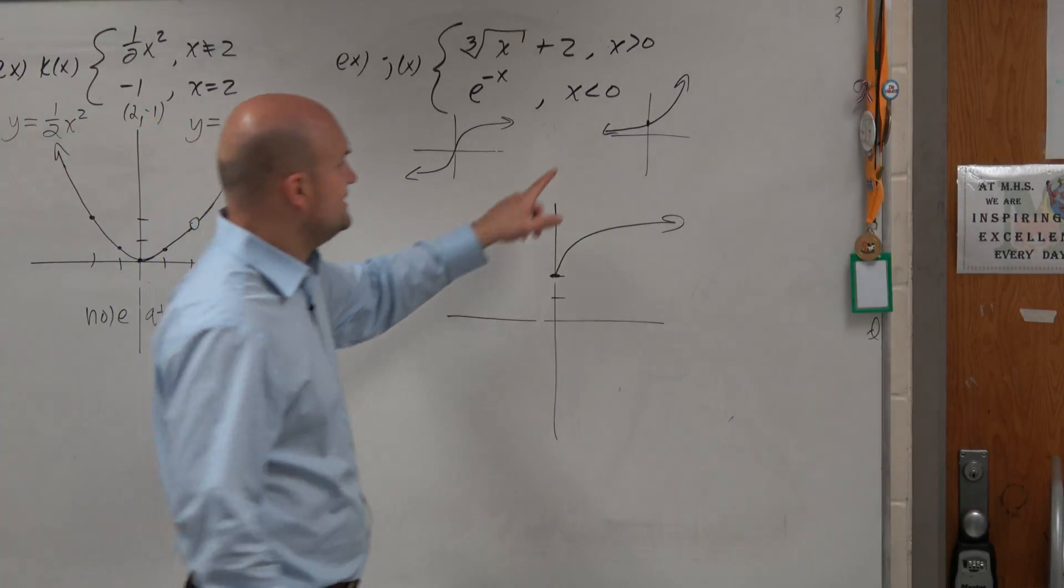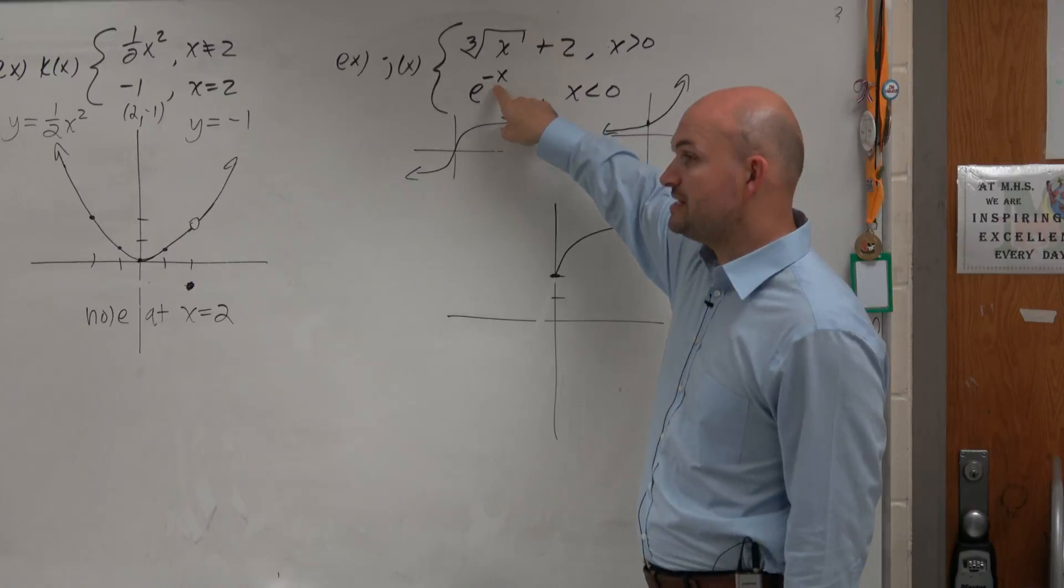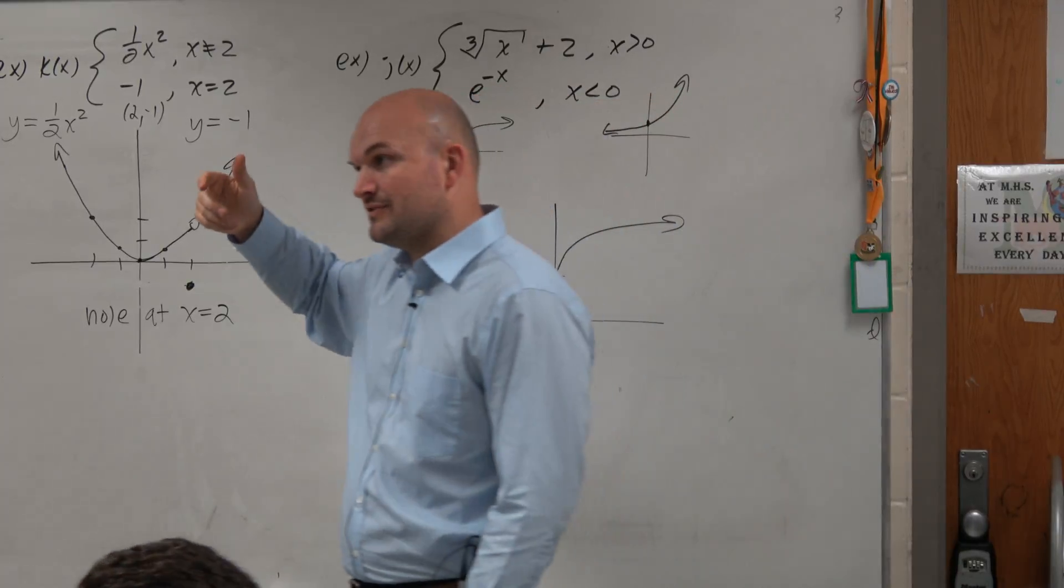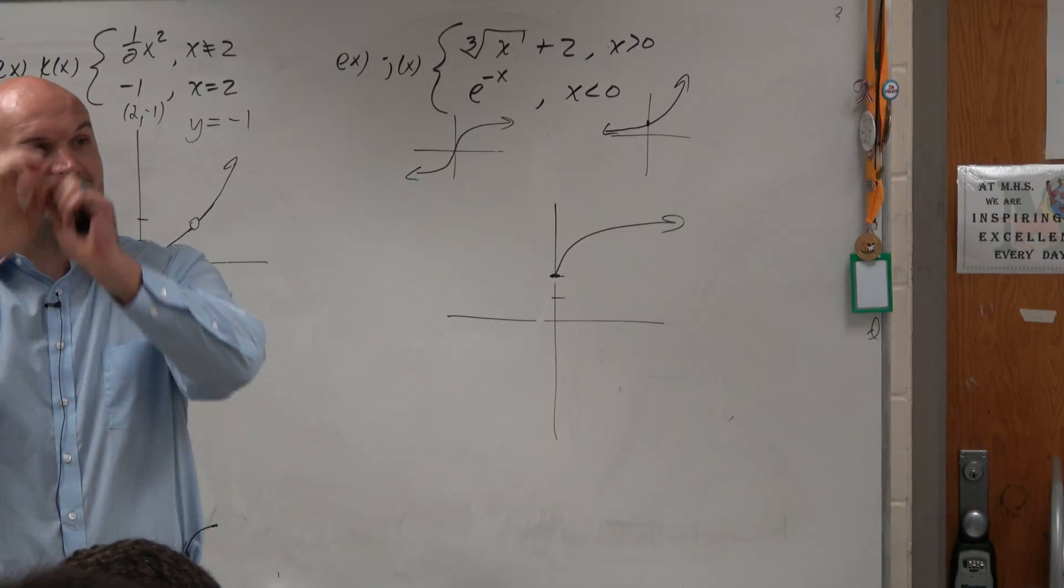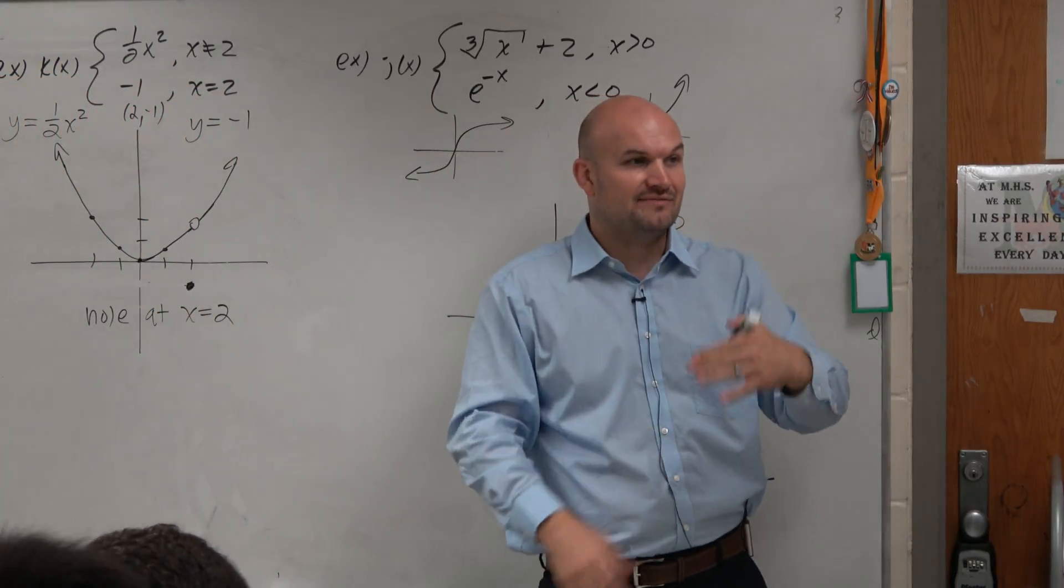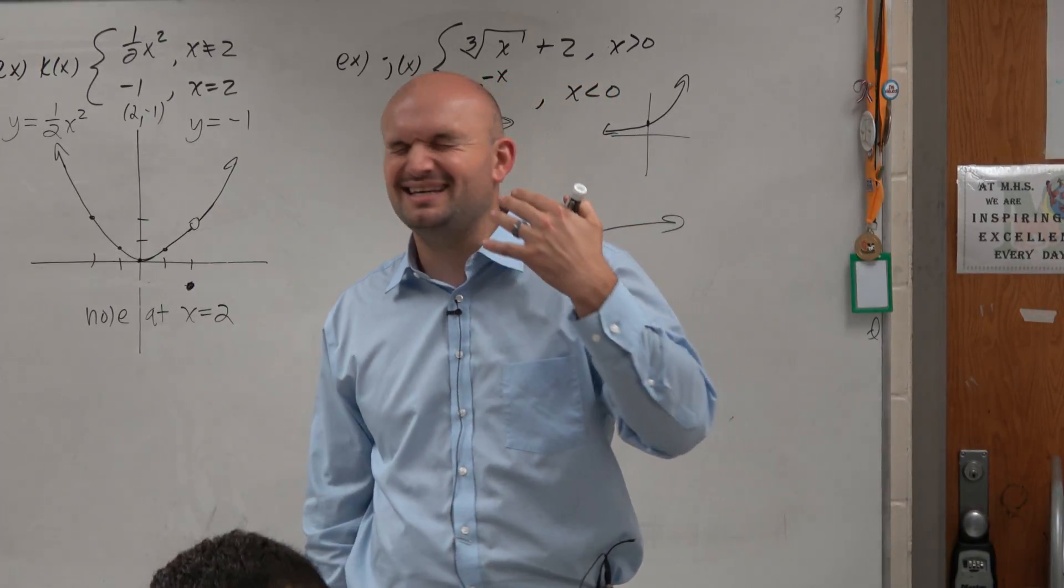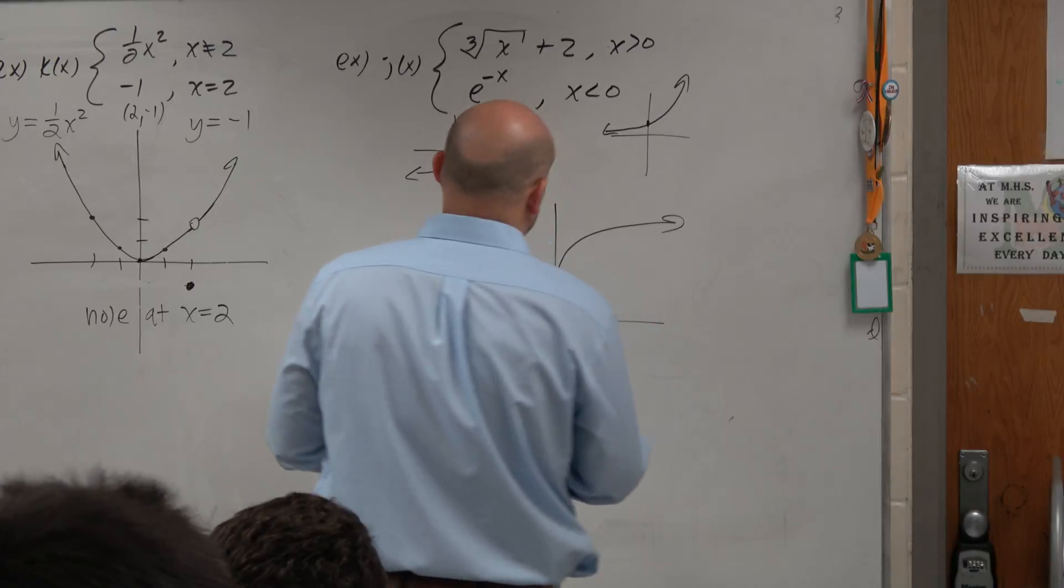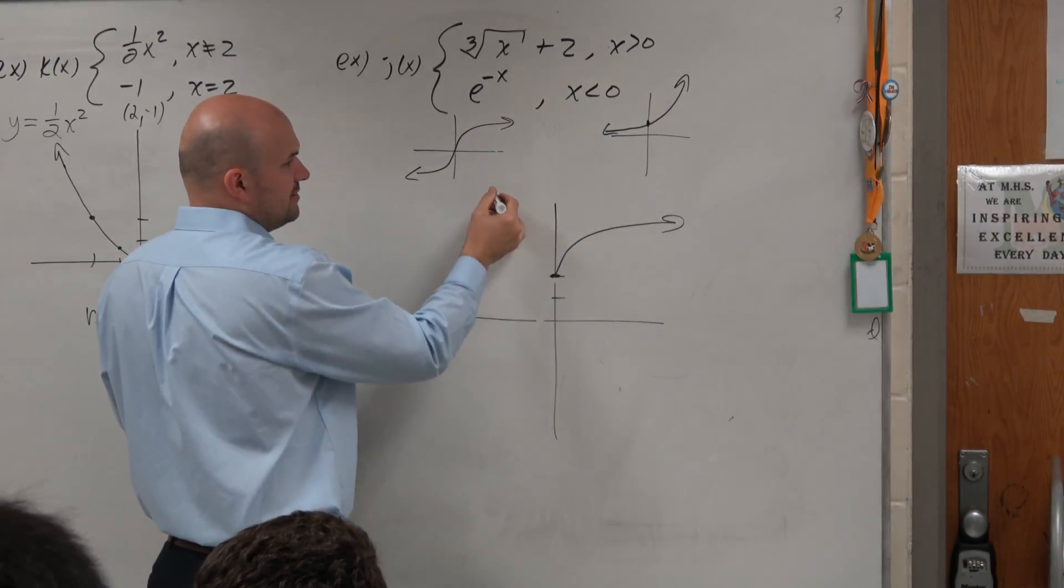Then we have our e to the x function. e to the x looks like this. Then we look at our transformation. We're multiplying by a negative. So we say, are we multiplying by a negative inside or outside the function? Well, since it's as a power, it is inside the function. And when we multiply by a negative inside the function, per our notes, that is a reflection about the y-axis. So it's basically this graph flipped about the y-axis. So then it looks something like this.